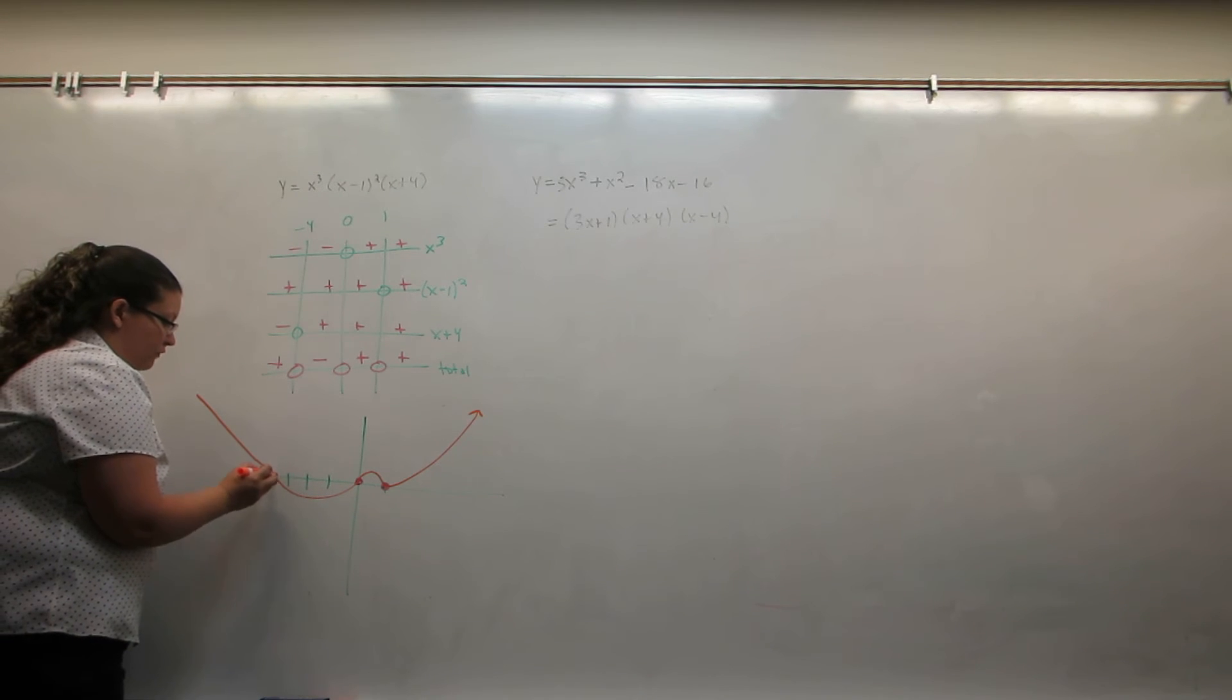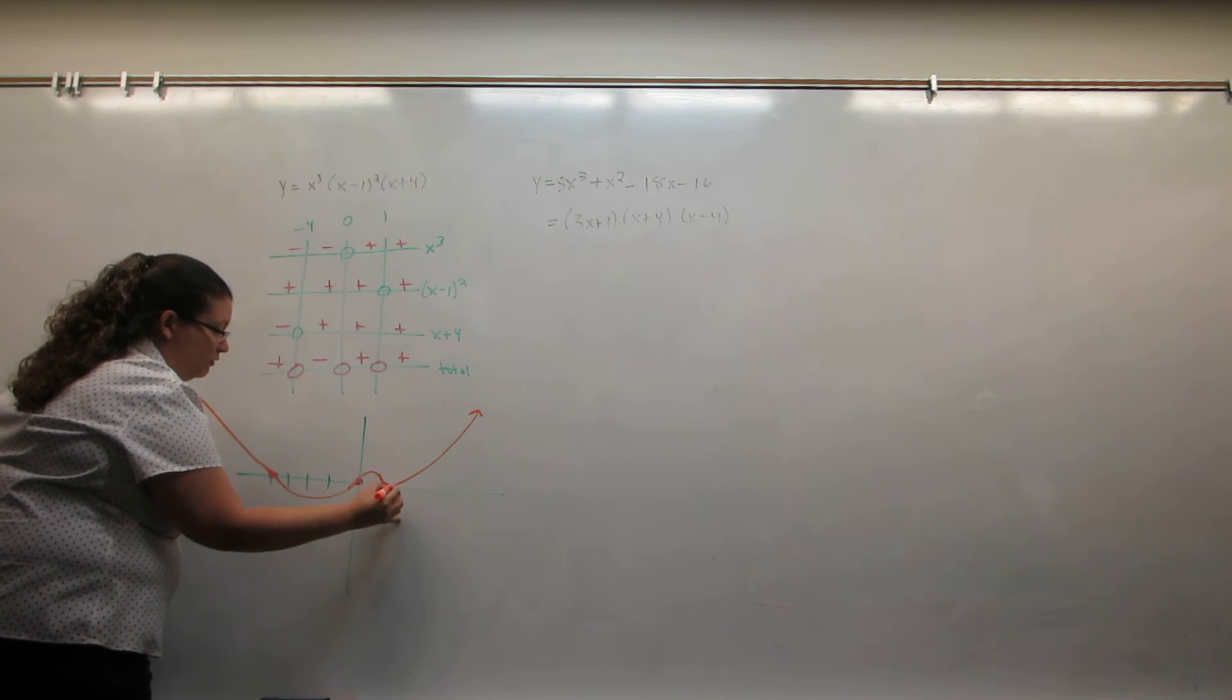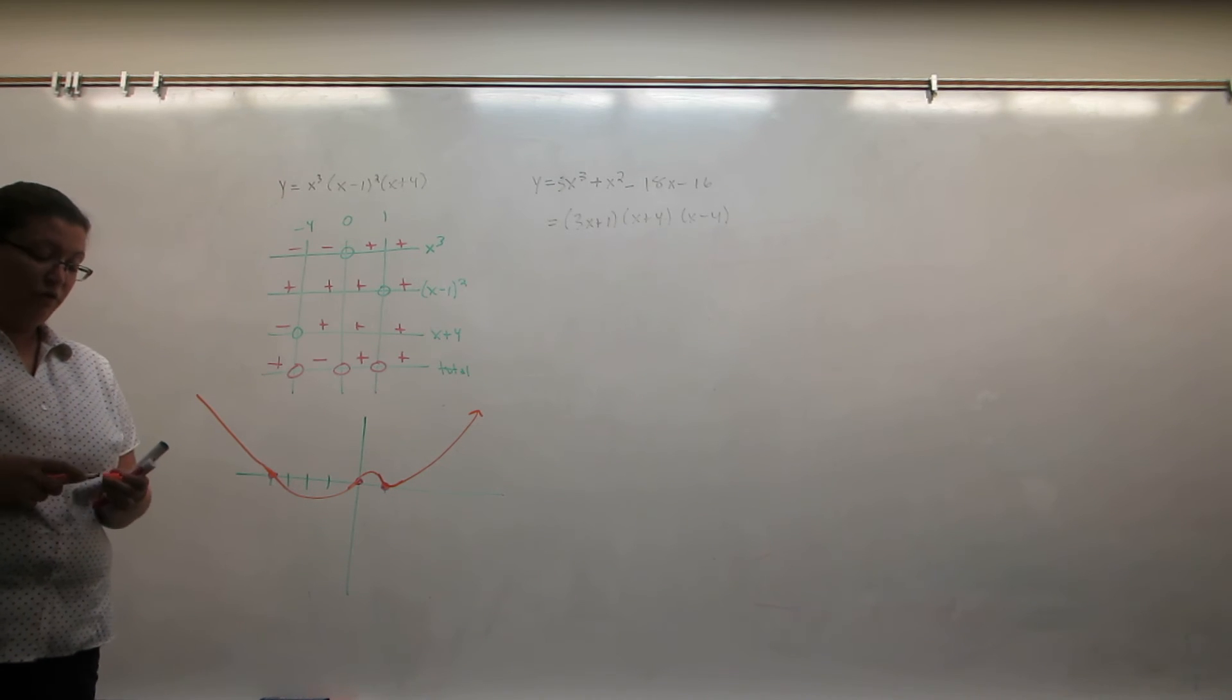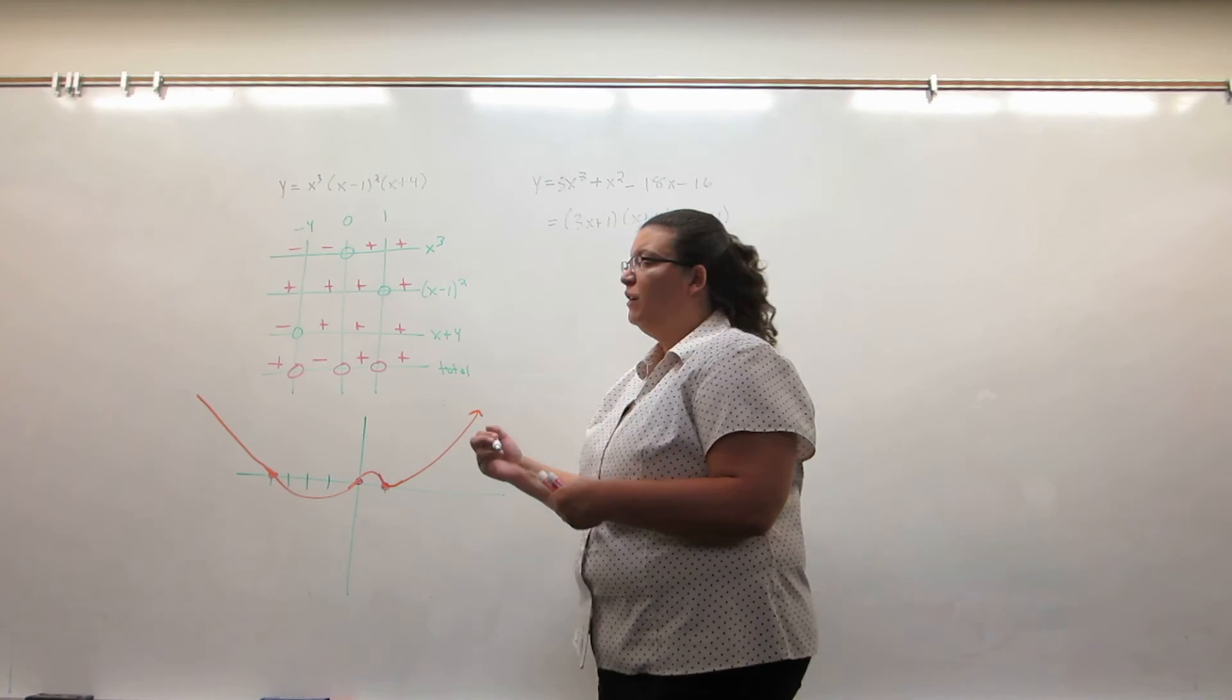Now, make sure you go back and smooth out the connections, especially this one right here. It needs to be smooth and not a point. But otherwise, we have a very good graph of our polynomial. Let's do one more example just to make sure we have got it.